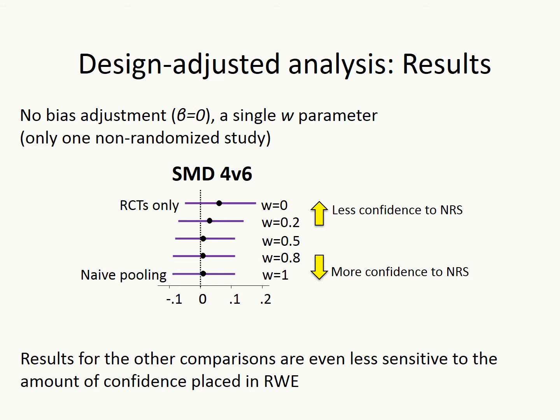We applied the design-adjusted analysis to our schizophrenia data. We set beta equal to 0, assuming we don't expect bias in the single non-randomized study, but we have some uncertainty about the exact magnitude and direction of bias, reflected in parameter w. The plot presents the standardized mean differences for the comparison of drugs 4 and 6 for different values of the w parameter. The results for this drug comparison appear to be robust to the different levels of confidence placed in the non-randomized study.